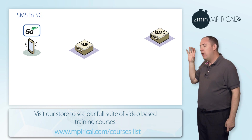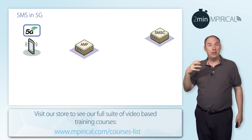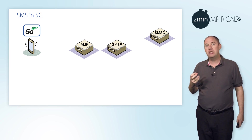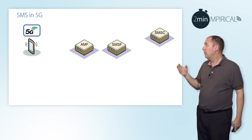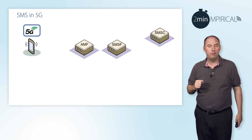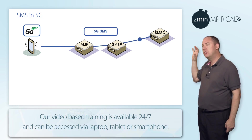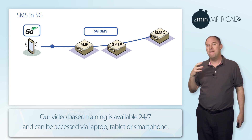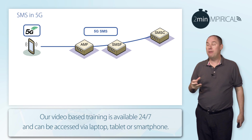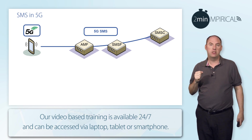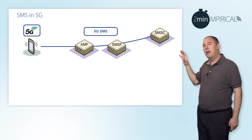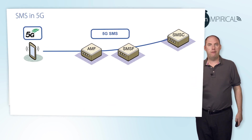In order to get SMSs to the device, we also need a new function called SMSF — the short message service function. This is part of the 5G core, and it will now allow us to deliver SMSs via the device. As the device comes on, it registers with the AMF, and it also needs to register with the short message service function. That's the delivery of SMS over 5G.